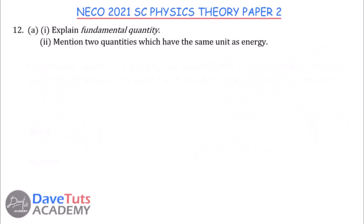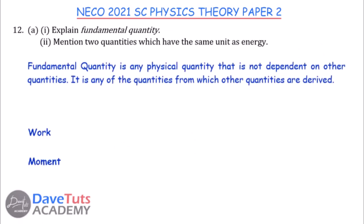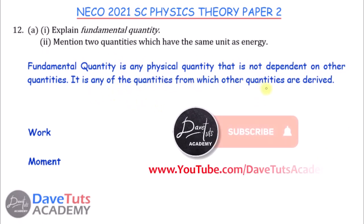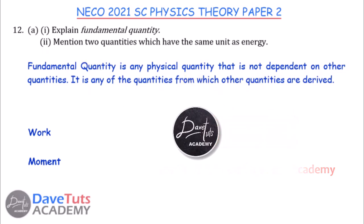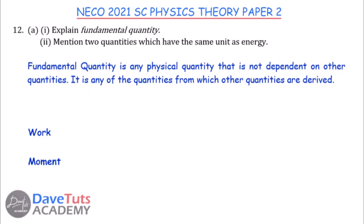A fundamental quantity is any physical quantity that is not dependent on other quantities — it is a standalone quantity and is one from which other quantities are derived. For the second part, we need to find two quantities with the same unit as energy. Let us consider potential energy: PE = mgh.